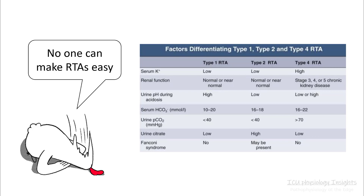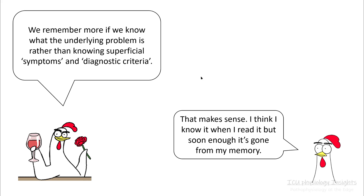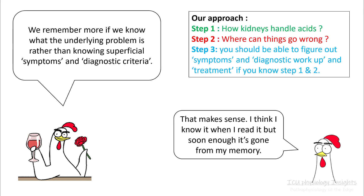I did not find any YouTube videos on this topic that would explain these concepts in a way that's easy to understand and apply clinically. Most of them will give a table similar to this one to differentiate one RTA from another. But personally, I don't think I can remember tables like these. We tend to remember more if we know what the underlying pathophysiological problem is rather than just remembering the symptoms and diagnostic criteria. So in this case, we'll approach this in a different way.